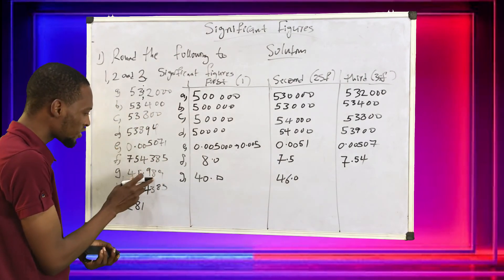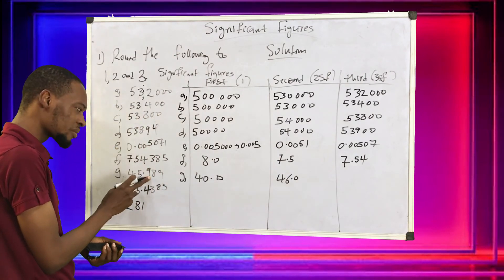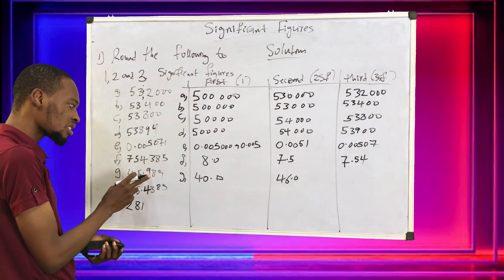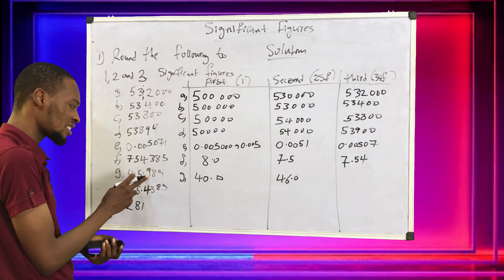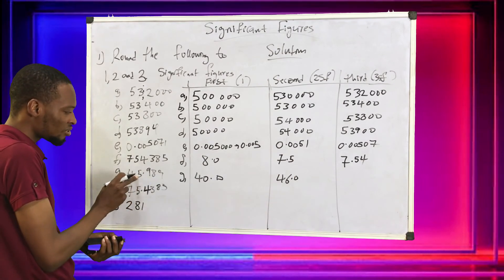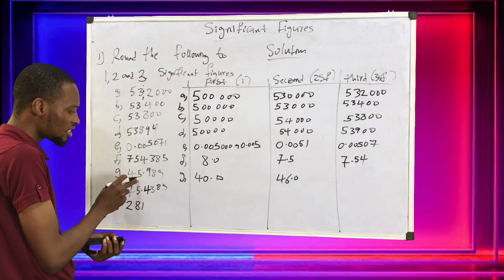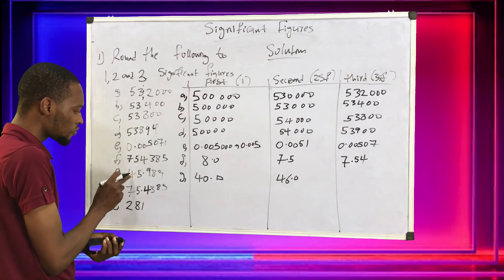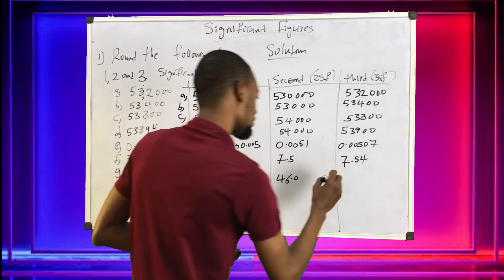To three significant figures: if you add 1 to this digit, it's 10, so you carry it back. This becomes 6, giving 4.60.